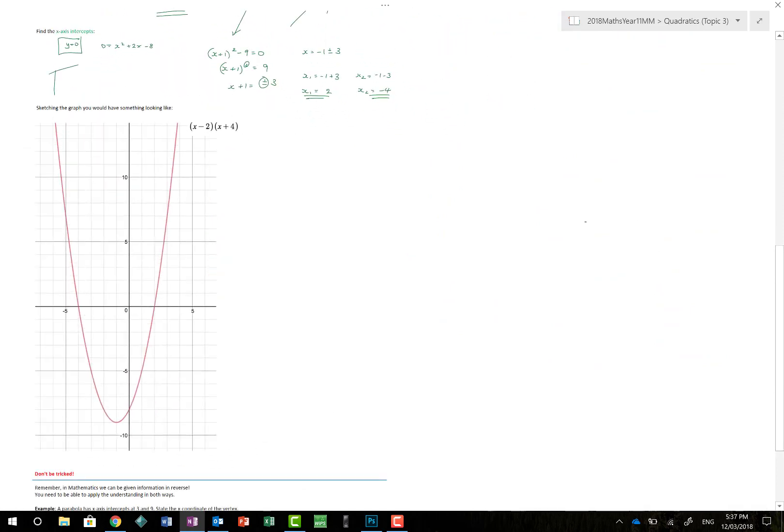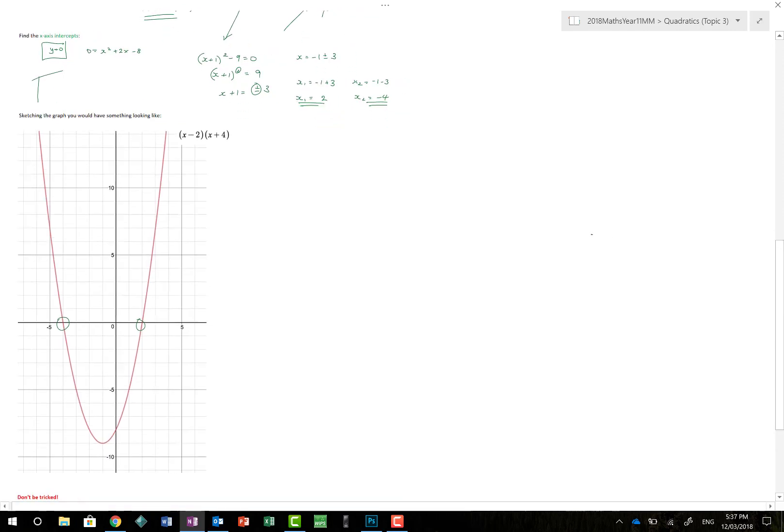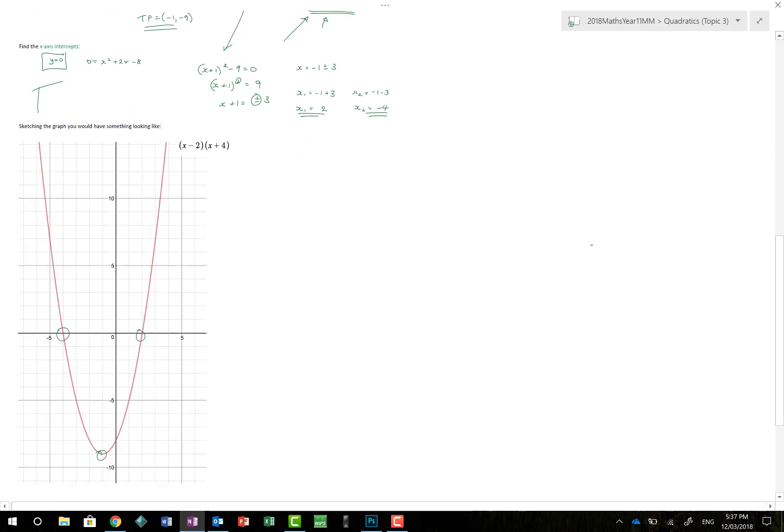It gives me X1, or my first value of X is minus 1 plus 3, and my second value of X is minus 1 minus 3. So, X1 is equal to 2, or X2 is equal to minus 4. Have I got all the information I need to know now? I've got my crossing point at 2 minus 4. I've got my turning point, and I've got my Y axis intercept. X1 is at 2. There we go. There's 2. X2 is at minus 4. There's minus 4. I've got my turning point at minus 1, minus 9.